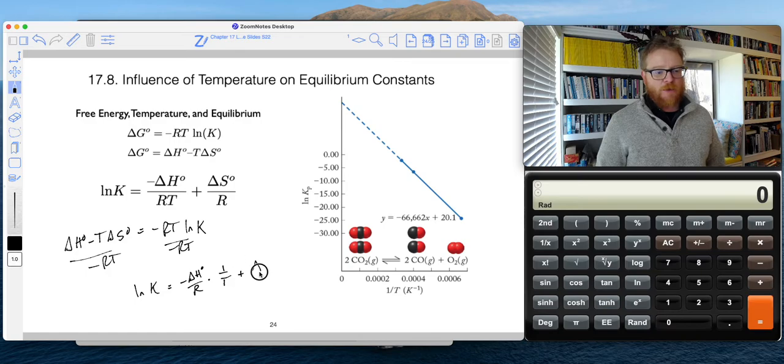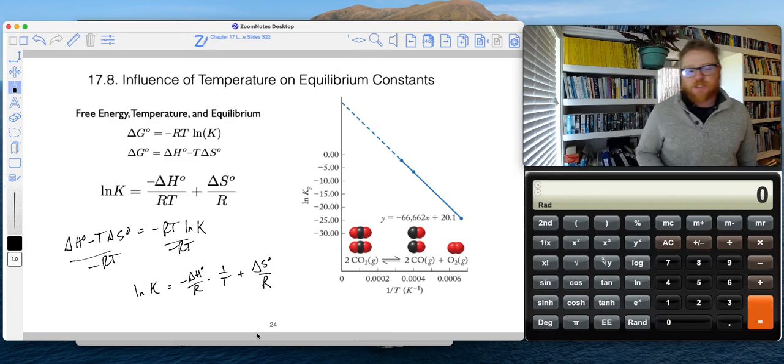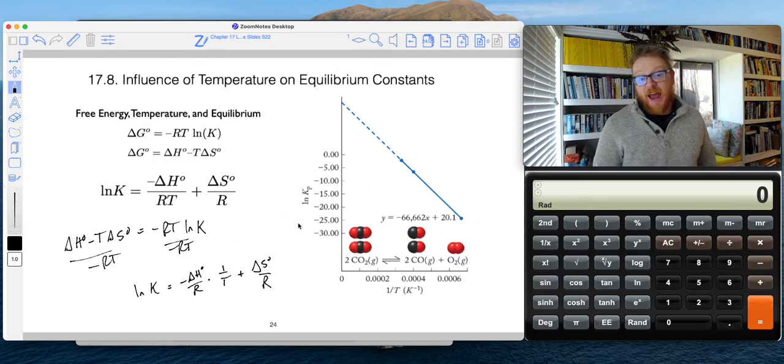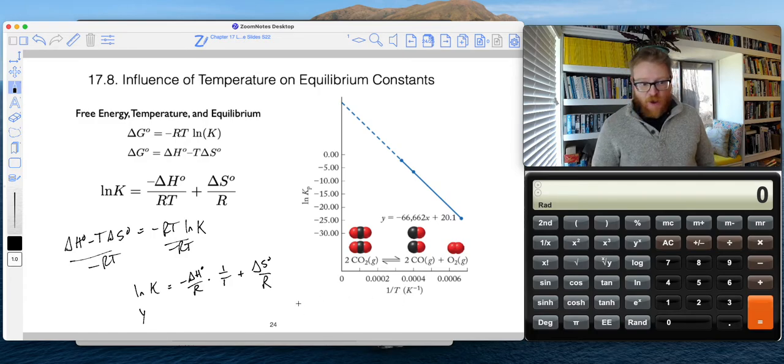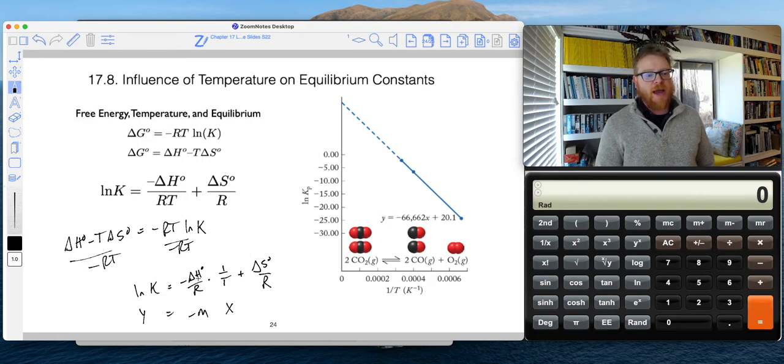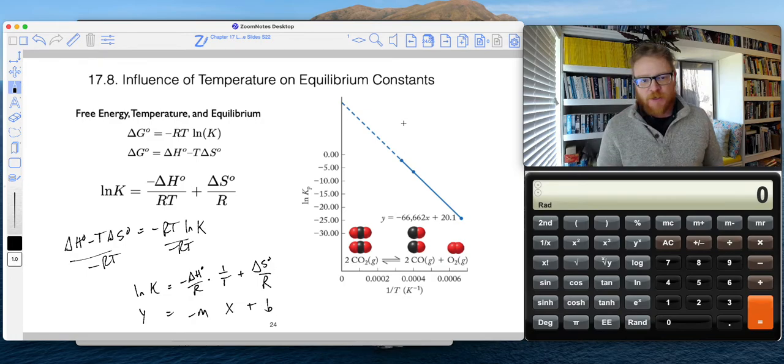So we can see now that this is going to be very similar to standard graphical manipulations we've been making. So now if I've got natural log of K on the y-axis, and 1 over T on the x-axis, then now this means my delta H divided by R becomes my slope, and my delta S divided by R becomes my intercept.